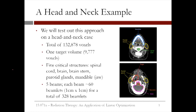Now let's take a look at a full example of a case. This is a head and neck example, and the CT scans are shown on the right. There are a total of 132,878 voxels. The target, or tumor, has 9,777 voxels.